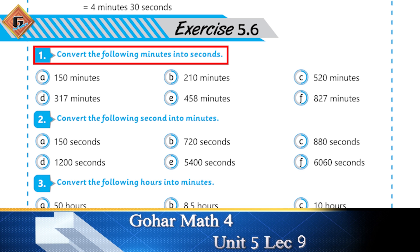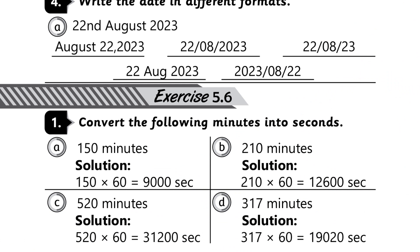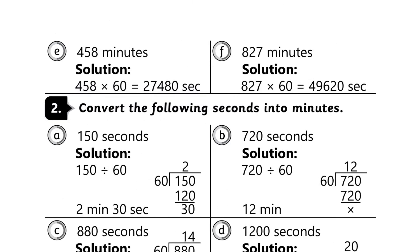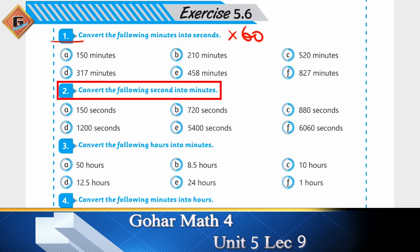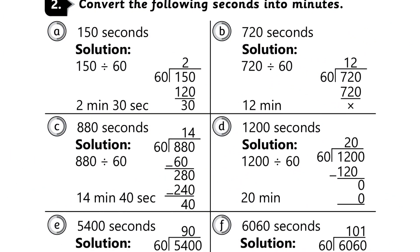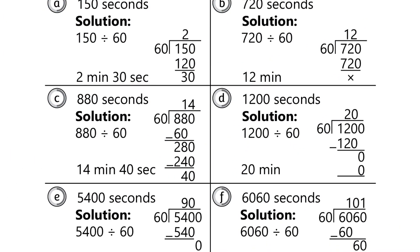Convert the following minutes into seconds — Question number 1. Minutes को आपने seconds में convert करना है, तो इसको आप multiply कर देंगे 60 से। जो भी answer आएगा वो seconds में आ जाएगा। Convert the following seconds into minutes — इसको आप divide करेंगे 60 से। छोटे से बड़े unit में जाना है तो divide, बड़े से छोटे में जाना है तो multiply।